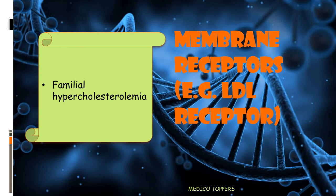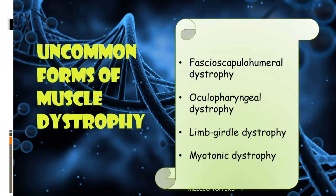Next comes membrane receptor issues. The low density lipoprotein receptor defect leads to familial hypercholesterolemia — you can remember this either as a membrane receptor defect or as a disease starting with the word 'familial.' Common forms of muscular dystrophy that are autosomal dominant include facioscapulohumeral dystrophy, oculopharyngeal dystrophy, limb girdle dystrophy, and myotonic dystrophy.